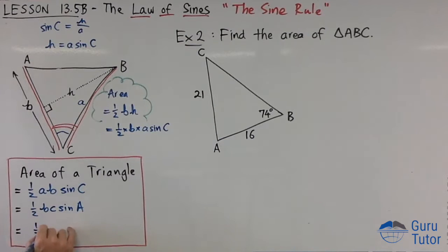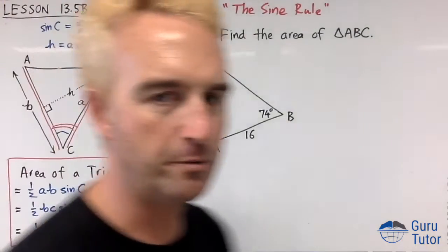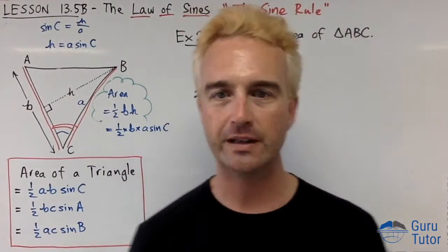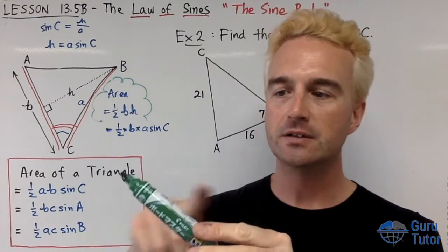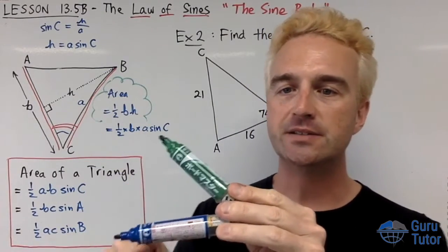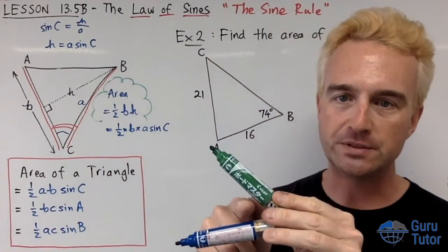You could do it with angle A, that would be a half bc sine A, and that could also be a half ac sine B. It's not worth memorizing these. The best way to remember this formula is you need two side lengths times sine of the angle between those two sides.